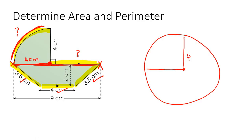So if this entire length from here to here is supposed to be 9, then that means this part here would have to be 5 centimeters.